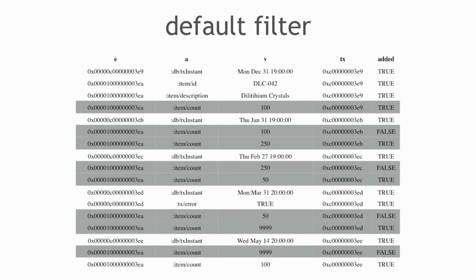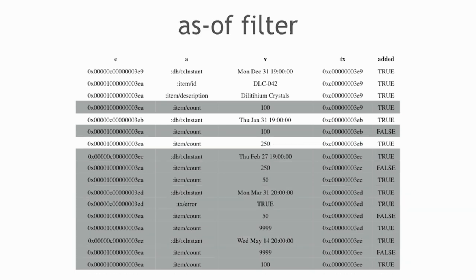With an as-of filter at some transaction, all the more recent stuff is filtered out — you've wound back in time. For example, as of the transaction that set 250: the 100 before that is also filtered out because it was retracted. So looking at the database as of that point in time, how many dilithium crystals are there? 250 — that's the current value at that point.